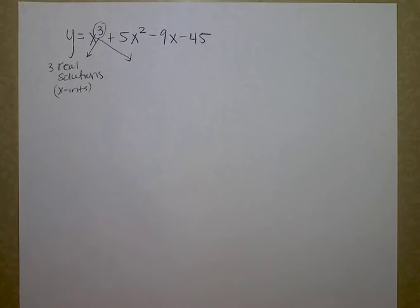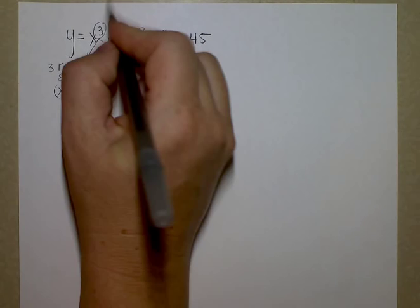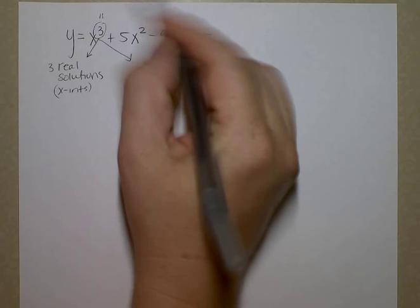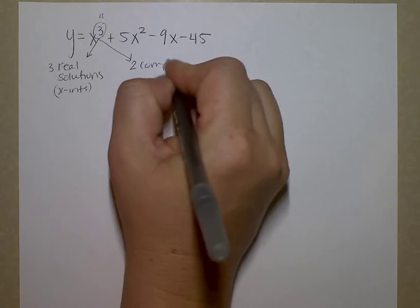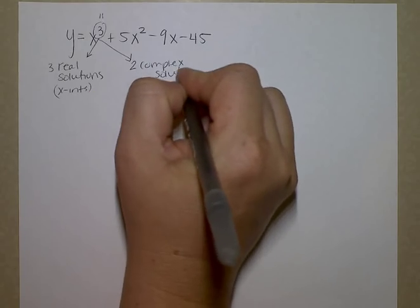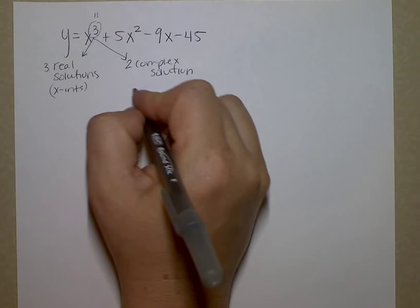And then when I think about complex solutions, complex solutions come in pairs, like plus 2i and minus 2i. So how many pairs can I fit into three? I can fit one pair of two into three. That means I could also have a possibility of two complex solutions, solutions containing i, and one real solution.